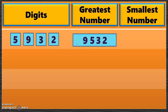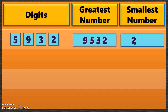Now let us build the smallest 4-digit number by arranging the digits from small to big. 2 is the smallest number, then 3, then 5, and 9 is the biggest digit. So the smallest 4-digit number is 2359.